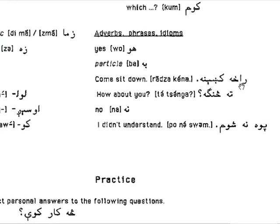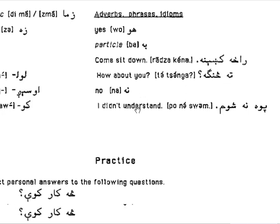'Raza kena' means 'come sit.' 'Ra' means 'here' — 'ra' is like 'towards me,' come towards me. 'Kena' means 'sit,' or in the Kandahari or western dialect it would also be 'kena.' 'Raza kena' means 'come and sit.' 'Ta singa' means 'how about you.'